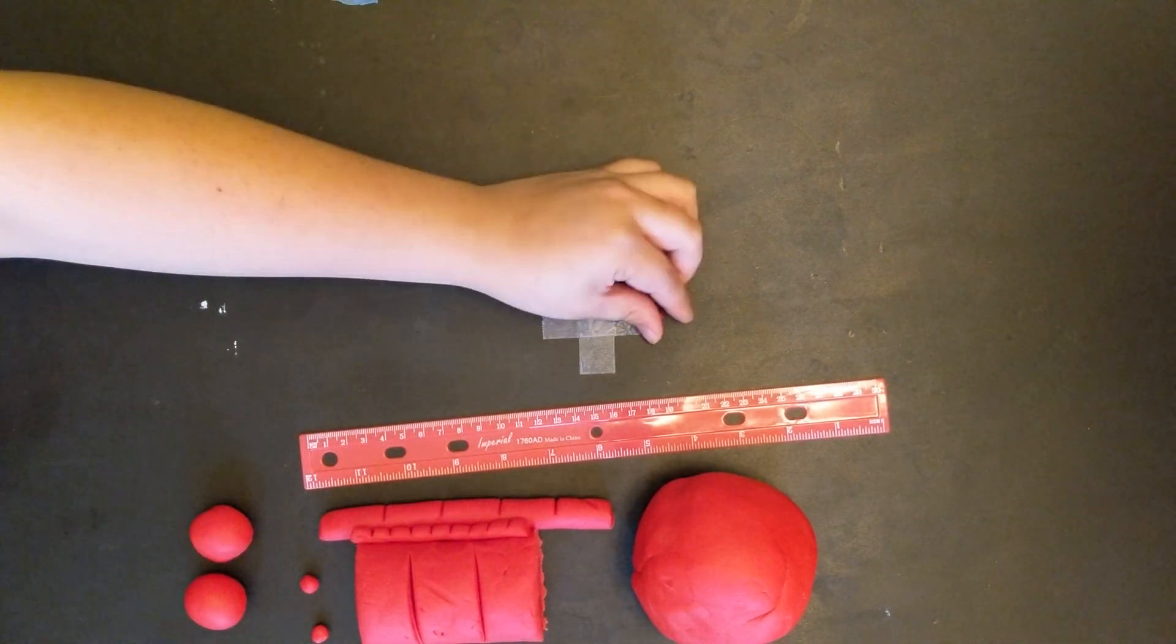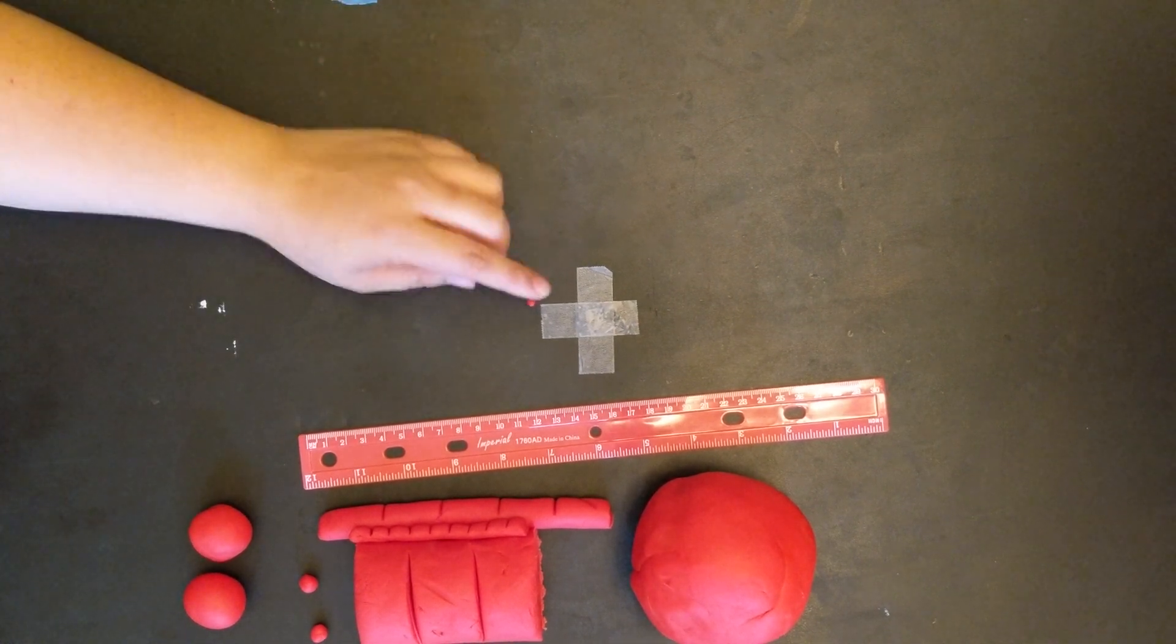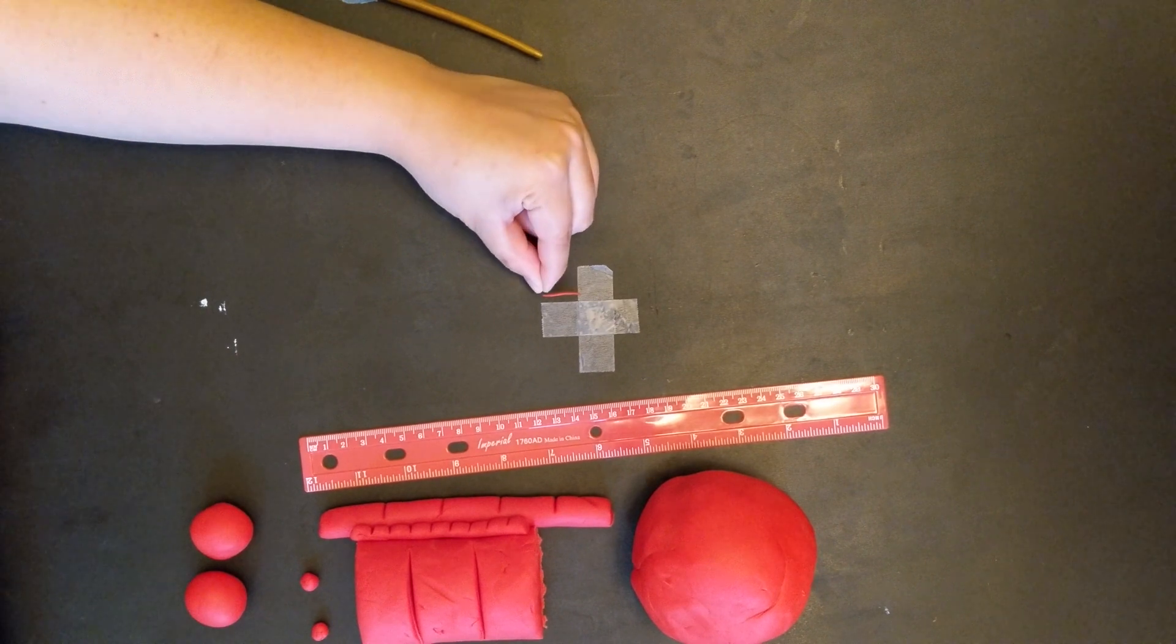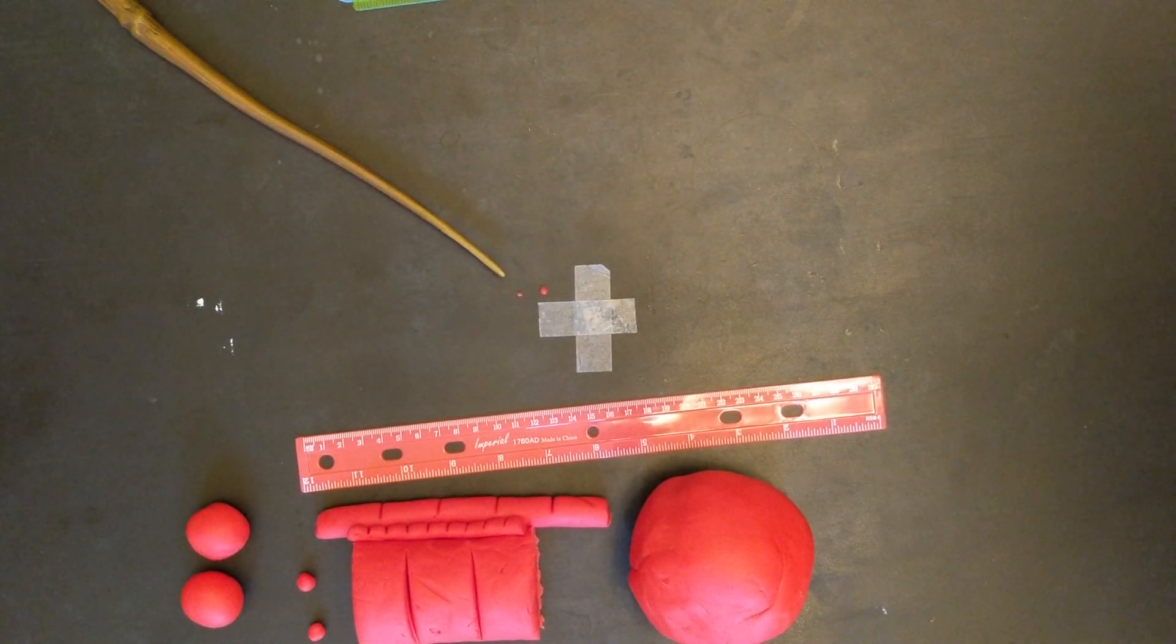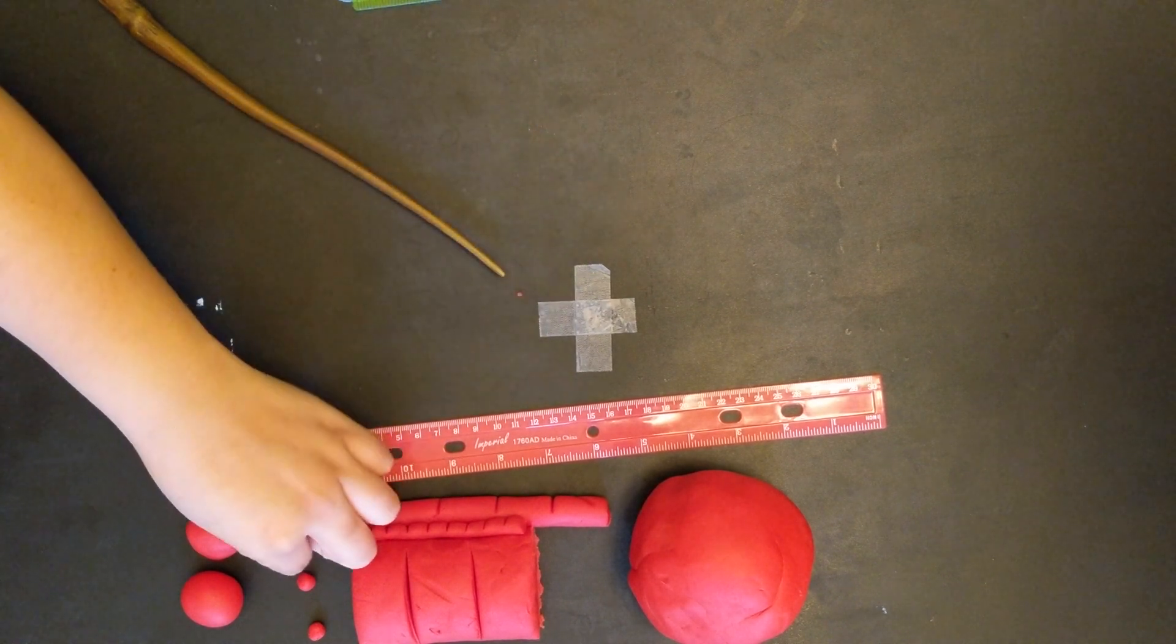Take your tiny leftover piece and roll it out to two centimeters, because we still need to make Mars and Mercury. Take two millimeters off of your last piece, and that is going to be Mercury. The remaining piece will be Mars.